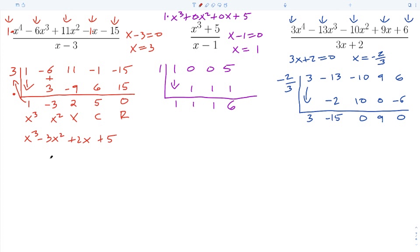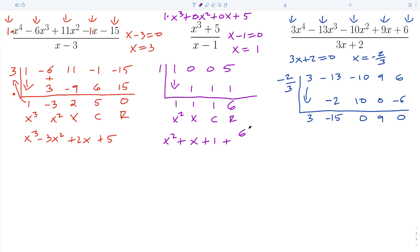Following that same process for the second example: six is the remainder, one is the constant, one is the coefficient of the linear term, and one is the coefficient of the quadratic term. When I write the polynomial quotient, I have x squared plus x plus one, and you always take your remainder and put it over your divisor — so that's plus six over x minus one.